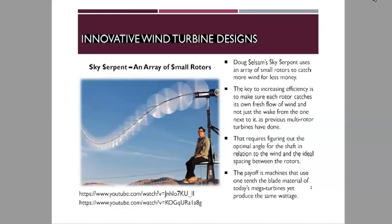Now we discuss the third classification: innovative wind turbine designs. There is a design referred to as the sky serpent — an array of small rotors built like a snake, with small rotors attached along its length. It is an example of an innovative turbine that exists.